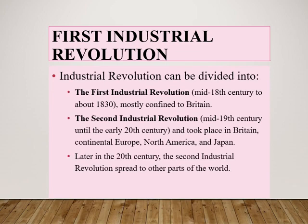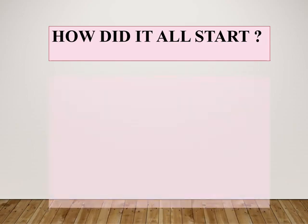Historians conventionally divide the Industrial Revolution into two approximately consecutive parts. The First Industrial Revolution lasted from the mid-18th century to about 1830 and was mostly confined to Britain. The Second Industrial Revolution lasted from the mid-19th century until the early 20th century and took place in Britain, continental Europe, North America, and Japan.